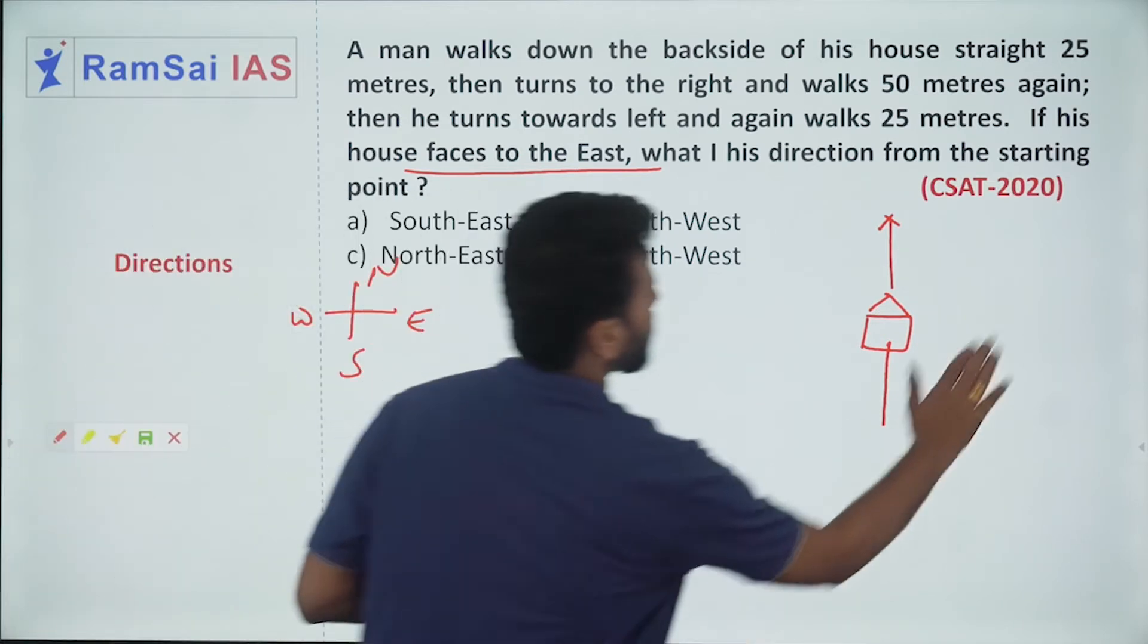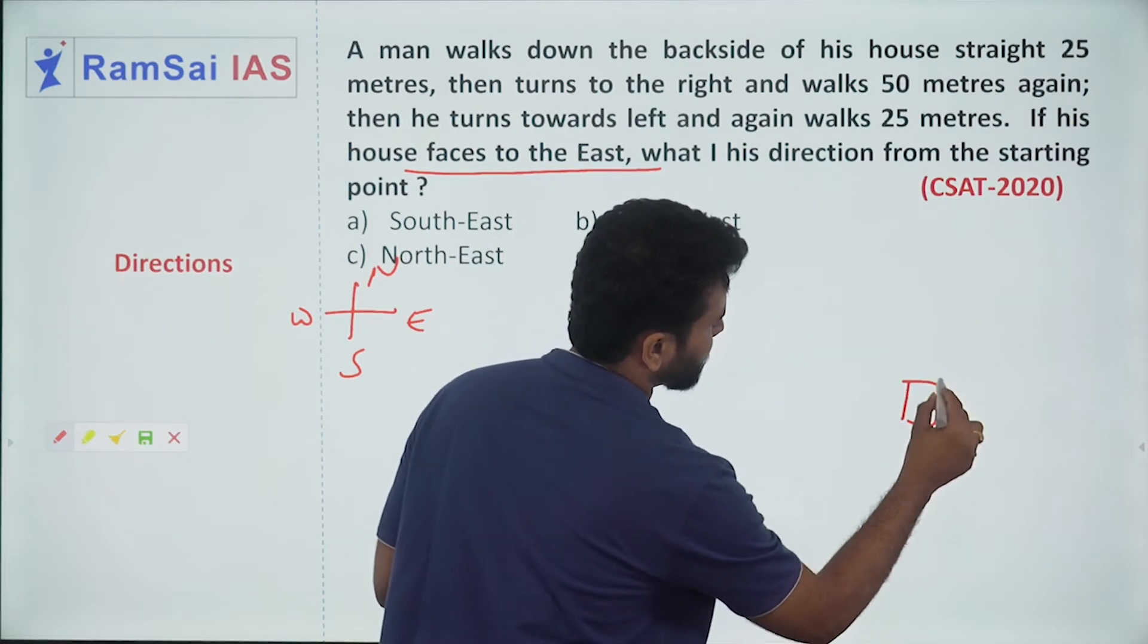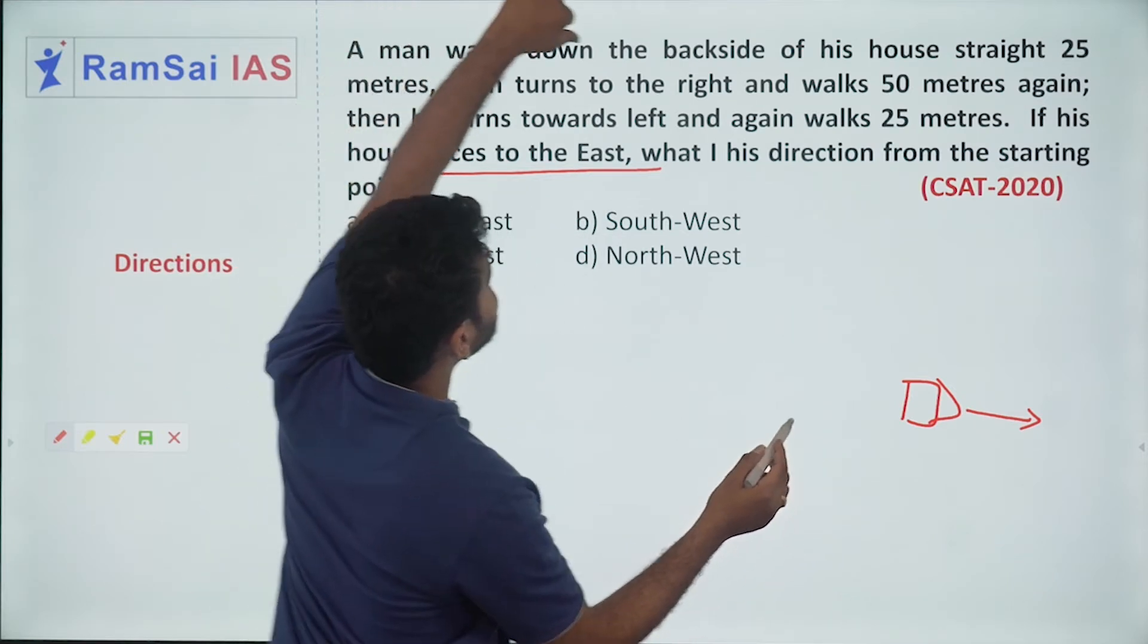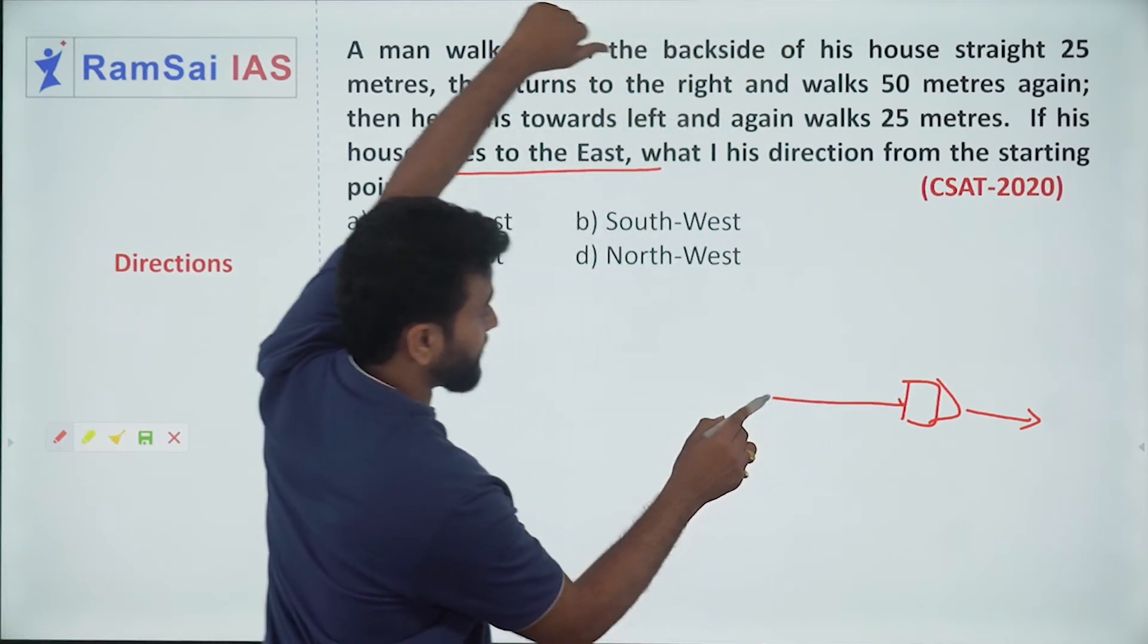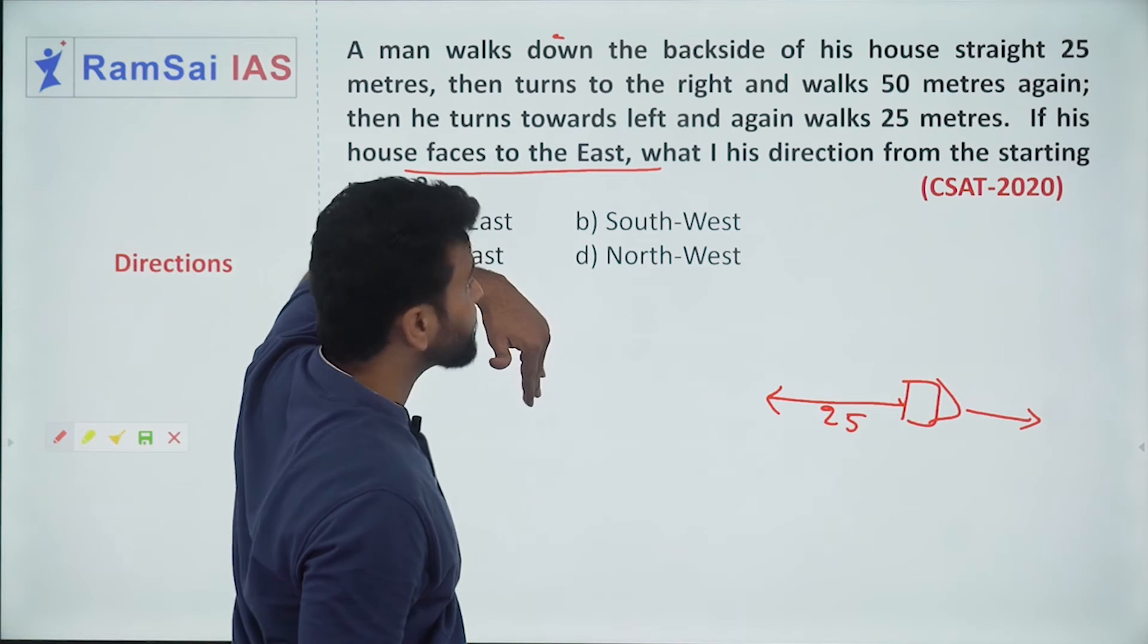So, this is his house. It is facing this direction. So, a man walks down back side of his house straight 25 meters, 25 meters back in the reverse direction.